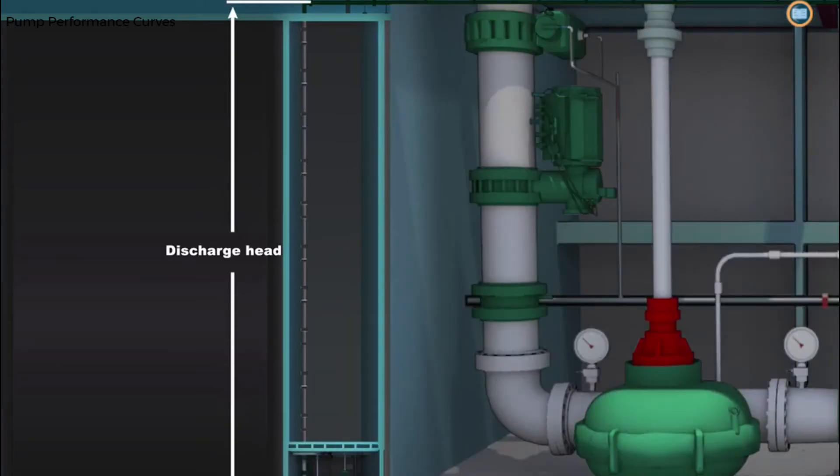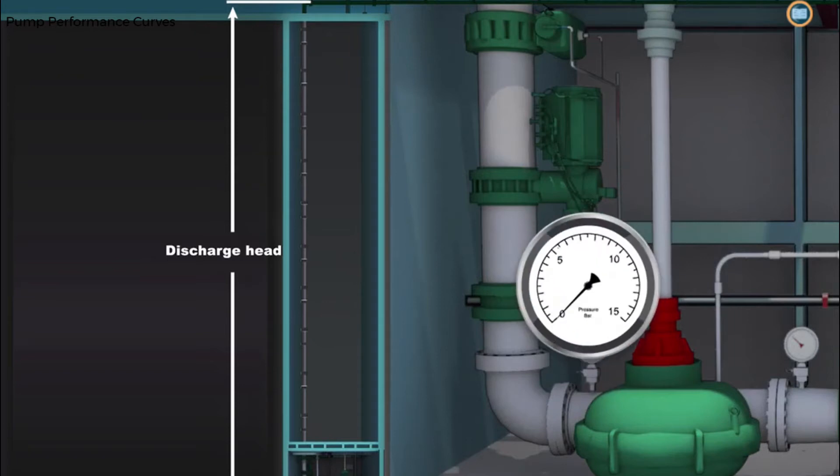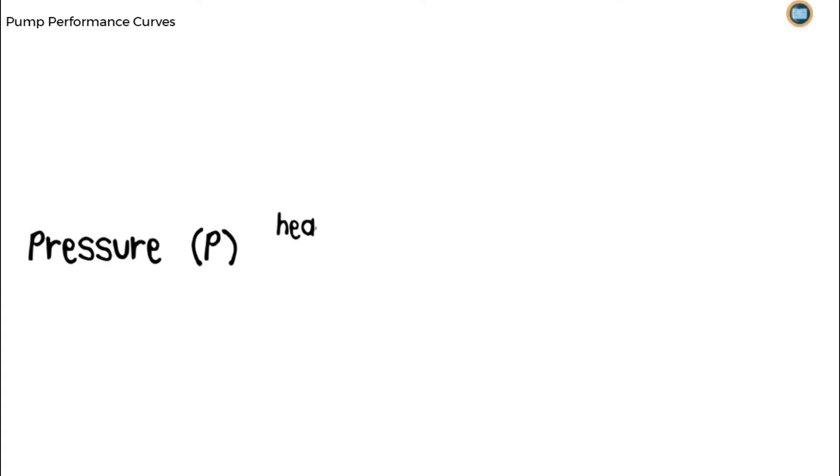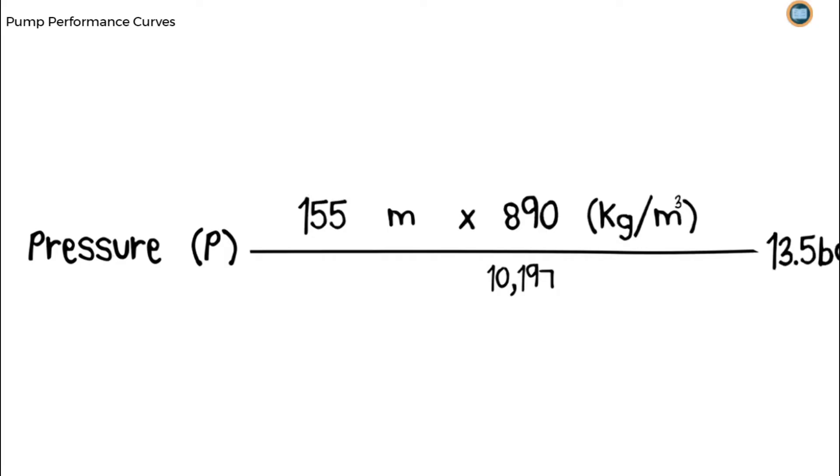This is usually measured in meters, but can be converted to the more familiar units of pressure known as bar. We do this by multiplying the head by the density of the liquid being pumped and dividing it by 10,197. For example, a head of 155 meters and a density of 890 kilograms per meter cubed would be equivalent to a pressure of 13.5 bars.